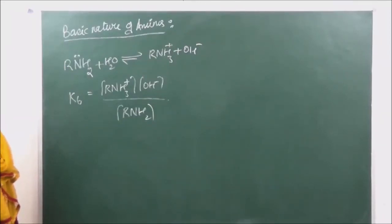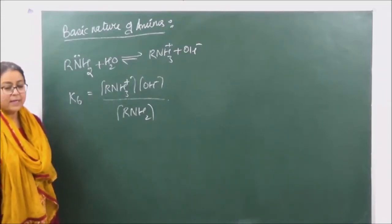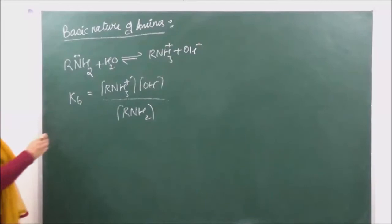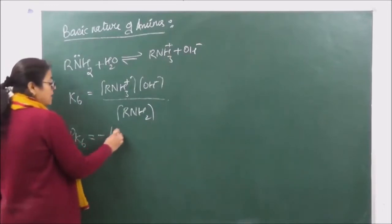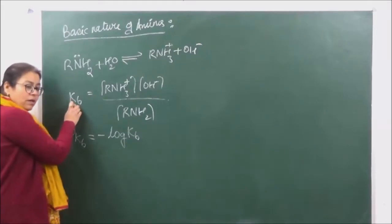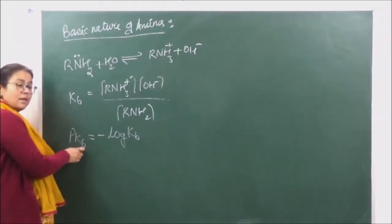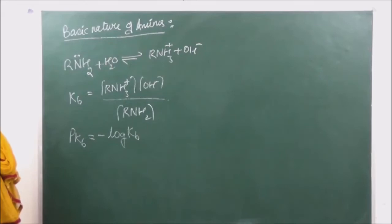The concentration of water is taken as constant. All those which generally have a higher value of Kb are going to be stronger bases. The basic strength can also be expressed in the form of pKb values, where pKb is equal to minus log of Kb. Greater the value of Kb, more is going to be the basic character. Lesser the value of pKb, that is going to be more basic. Larger the value of pKb, weaker is the base; smaller the value of pKb, stronger is the base.